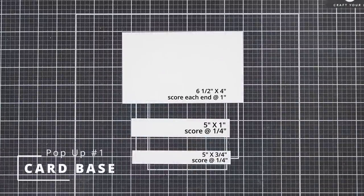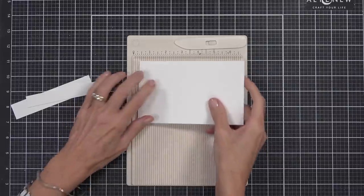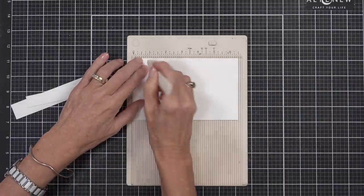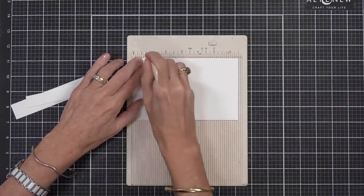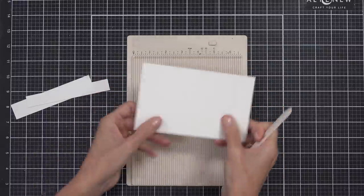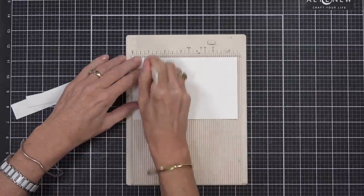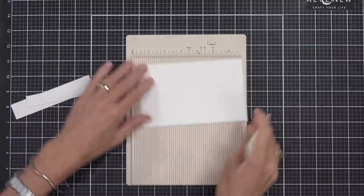This is really easy to do and you don't need any special dies. Starting with three pieces of cardstock, you don't have to remember all the sizes because I will have them written down at my blog post, and you can find that link in the description below.